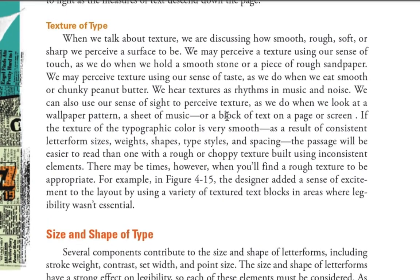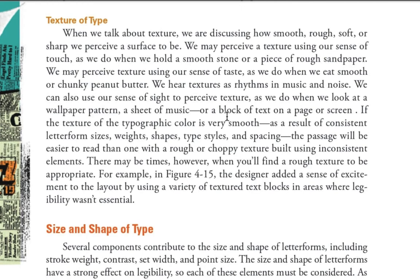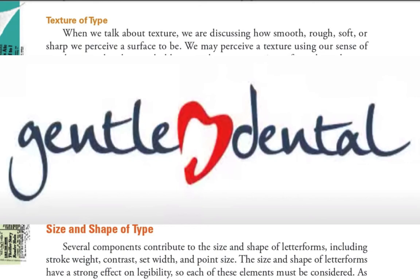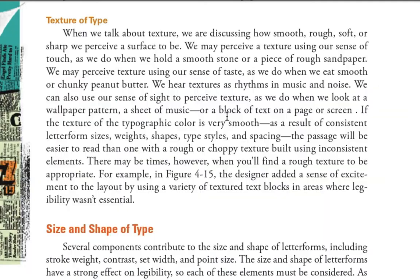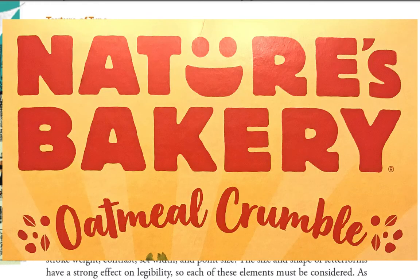Texture of type is also something to be aware of. For example, if you're designing a logo for a dentistry called Gentle Dentistry, you wouldn't use a sharp, angular typeface — you'd want something soft and gentle. Type has a particular texture to it; hard angles and sharp edges convey something different than softer, smoother letterforms. Similarly, organic packaging like Nature's Bakery uses a rough-textured font to give the impression of grains, oats, and a farm feel — as opposed to smooth machine-like letterforms.